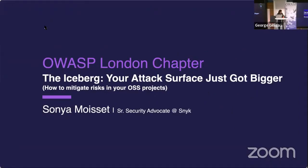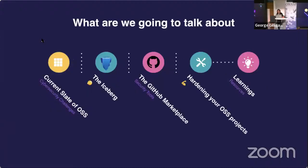Welcome to 'The Iceberg: Your Attack Surface Just Got Bigger,' a talk about helping you manage risk in your open source products. Today I'll give an overview of the current state of open source software and cybersecurity challenges, have a look at the iceberg analogy, explore the GitHub Marketplace and how to leverage tools to secure your pipeline, and share some tips on how to harden your OSS projects.